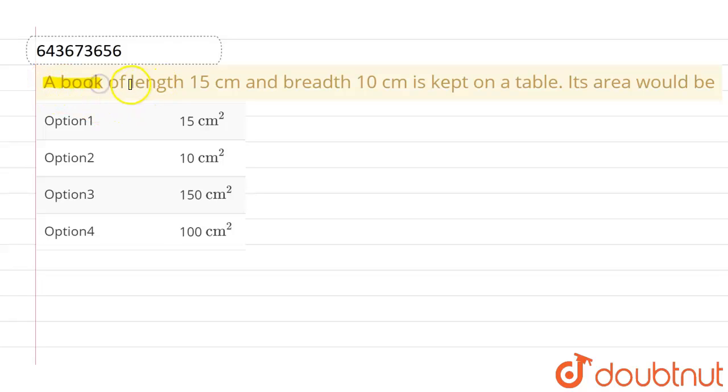The given question is: a book of length 15 centimeter and breadth 10 centimeter is kept on a table. Its area would be? The given options are 15 centimeter square, 10 centimeter square, 150 centimeter square, or 100 centimeter square.